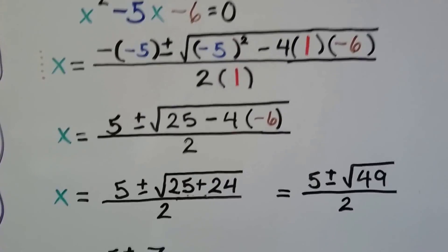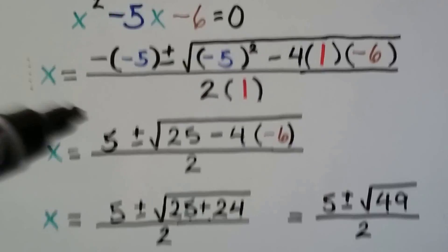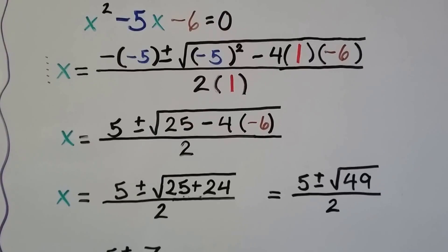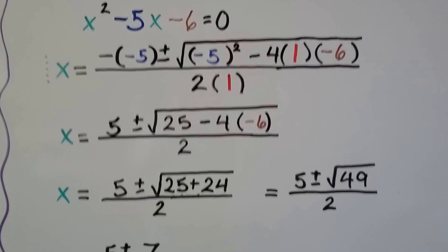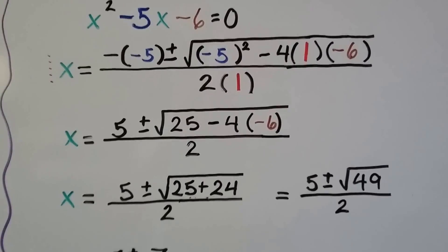So, -1 times -5 is going to give us that positive 5 right here. And it's plus or minus the square root of a positive 25, because -5 times -5 is positive 25. Then, remember PEMDAS.